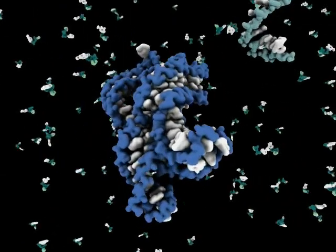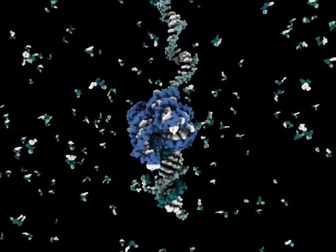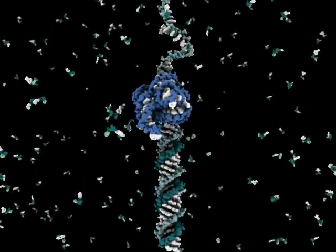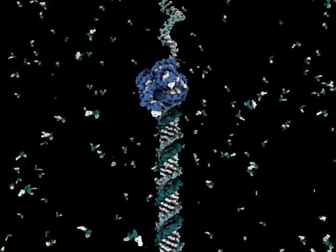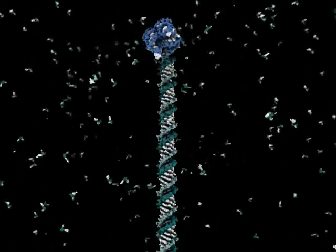This animation shows the process of RNA replication being carried out by a theoretical RNA replicase ribozyme. The replicase attaches to the end of the template strand. As the replicase moves along the template, it catalyzes the polymerization of a complementary strand.